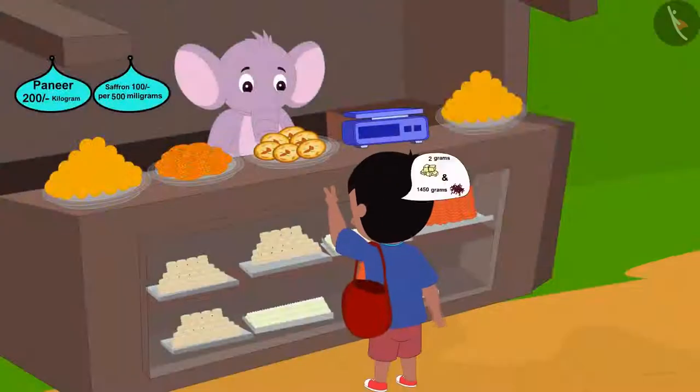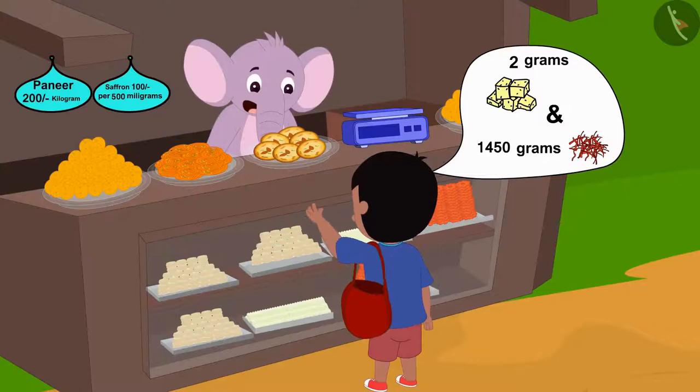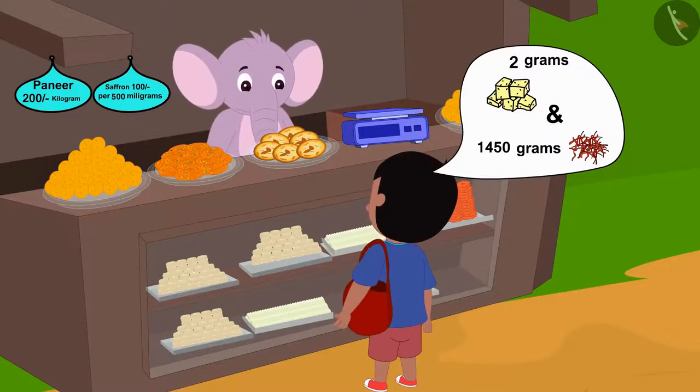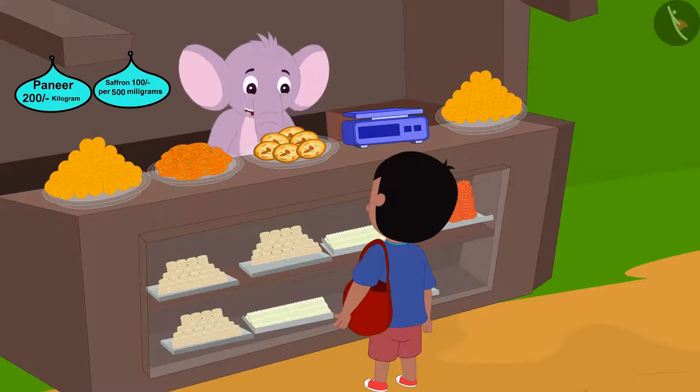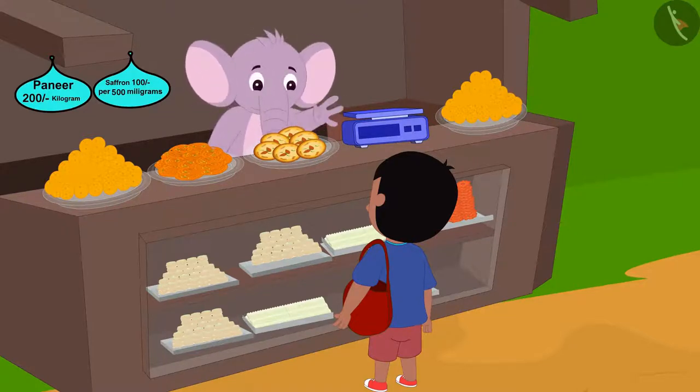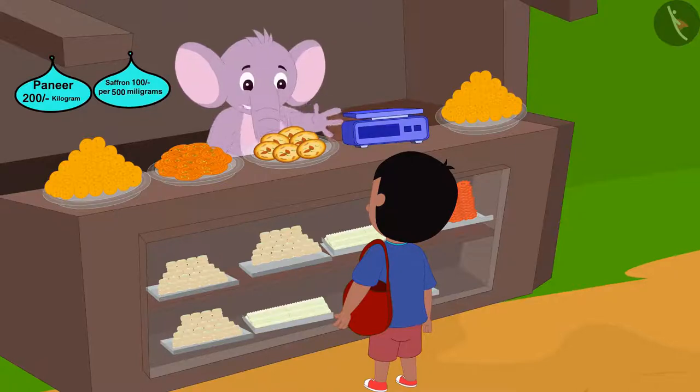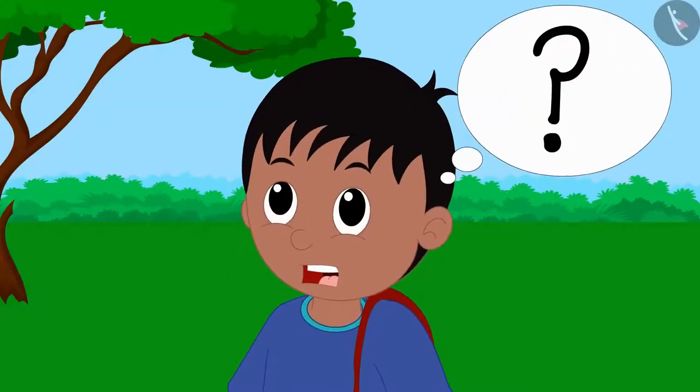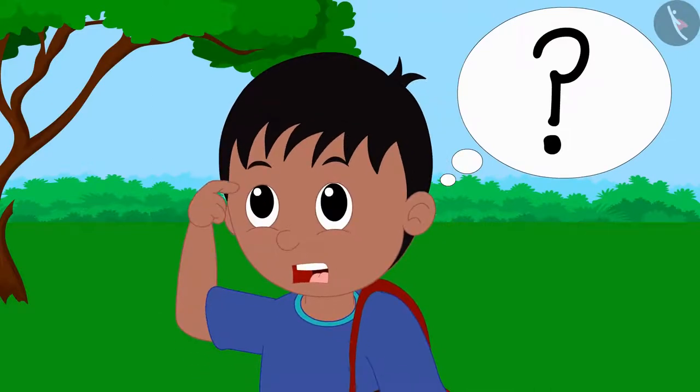I want 2 grams of paneer and 1450 grams of saffron, Raju told Appu. Appu laughed. You mean 1450 grams of paneer and 2 grams of saffron? Raju could not understand anything.